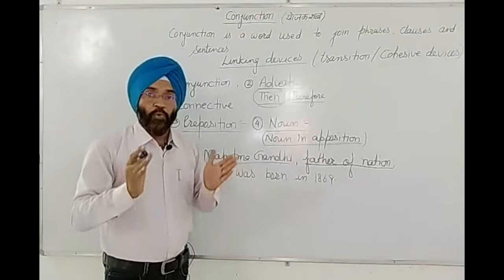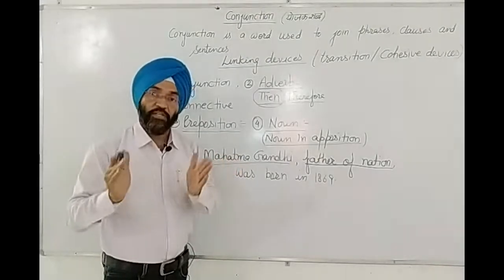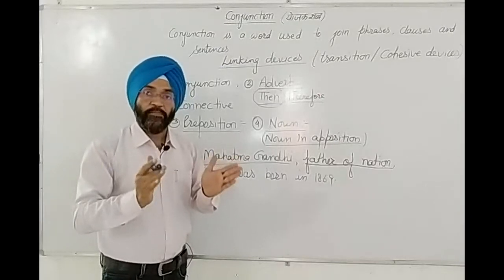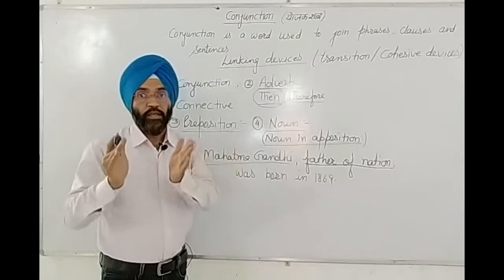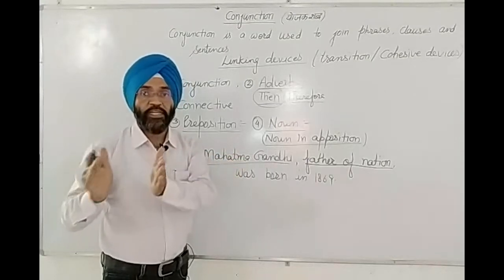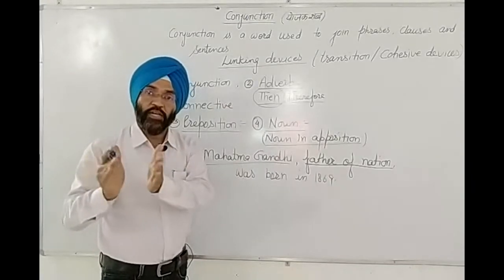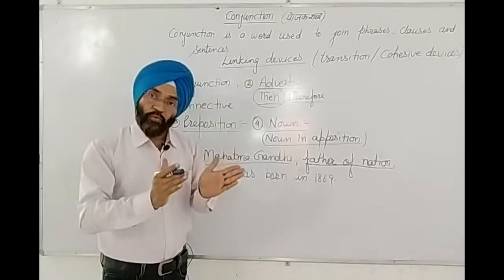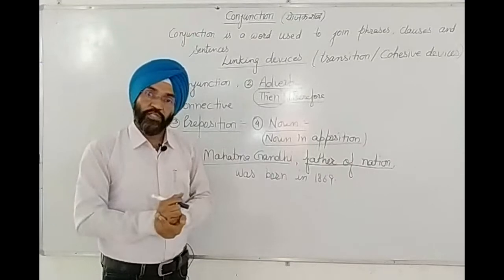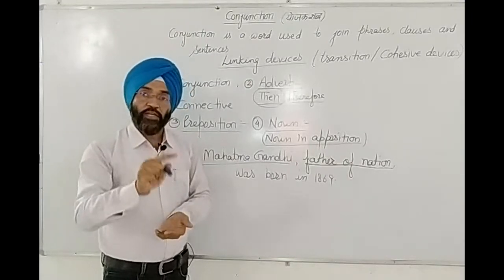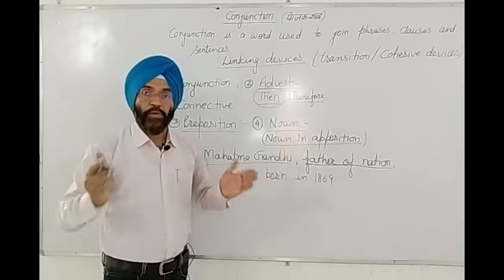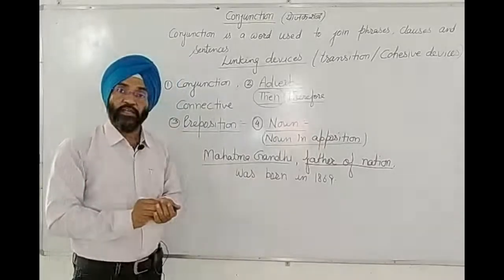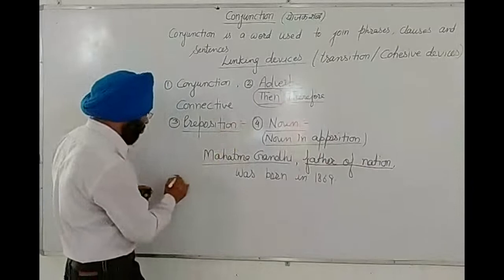Another example: 'Mohan, monitor of our class, is very intelligent.' Here 'Mohan' is the proper noun, and 'monitor of our class' is the noun in apposition — describing Mohan using just a comma, without any helping verb. Such words enlarge the sentence, so they are also known as linking devices.